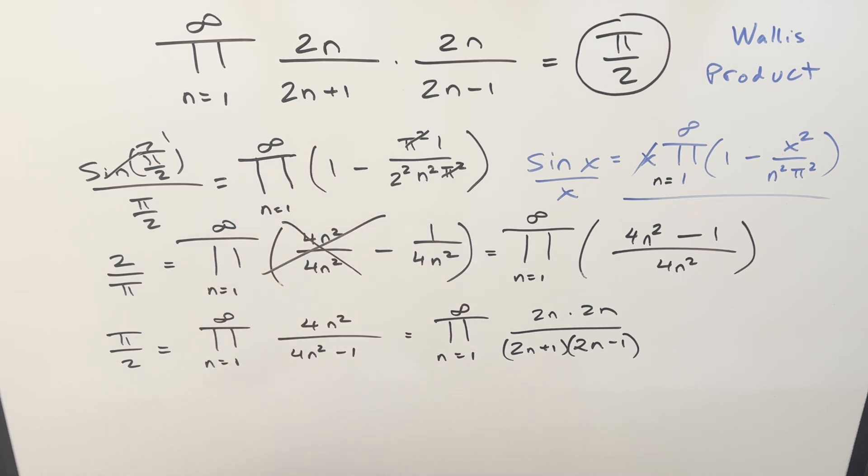And actually, let me clean it up a little bit, because I think it's actually nicer maybe to write it as 2 n minus 1 times 2 n plus 1. And then we'll just have the 2 n times 2 n here.